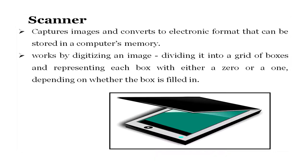The next device is the scanner — it converts images to electronic format that can be stored in a computer's memory. When you place a picture or a page in the scanner, it divides it into a grid of boxes, and each box is either a 0 or 1 depending on whether it is filled or not. This digitized form is saved as a picture. The scanner converts content into picture form only; even if you scan text, you get a photo image that can be cropped or resized but cannot be edited as text.